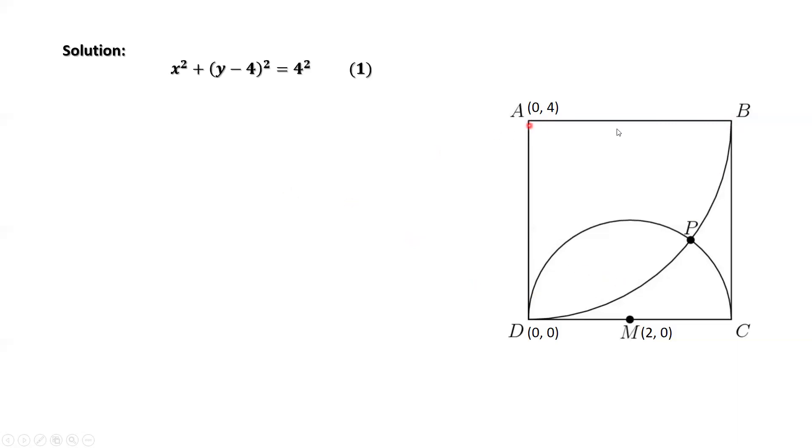For the big one, x minus 0 squared plus y minus 4 squared equals the radius 4 squared. This is the equation for this bigger circle.